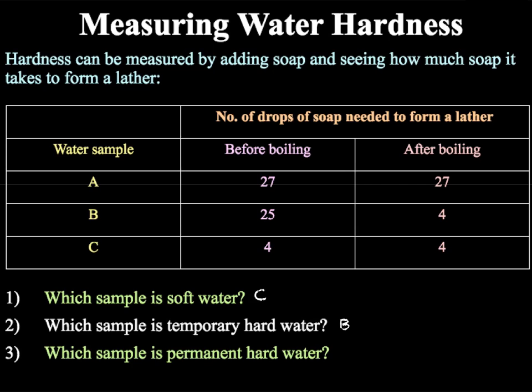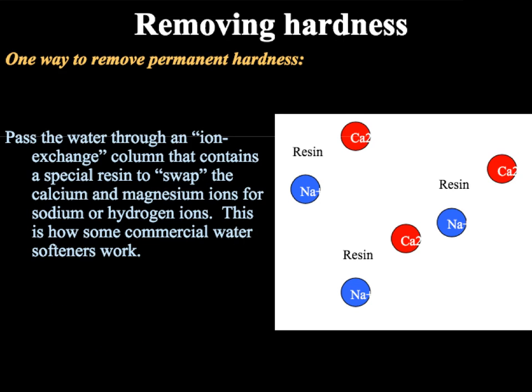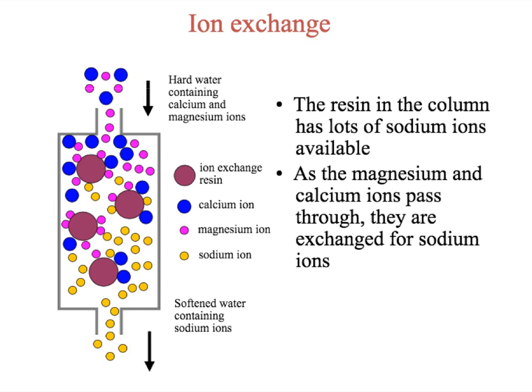Since boiling has had no effect on the hardness of sample A, in order to remove permanent water hardness we need to use an ion exchange column. This is a column that contains a special resin to swap the calcium and magnesium ions for sodium or hydrogen ions, and is how many commercial water softeners work. Inside the ion exchange column the special resin is held in place with lots of sodium ions available for exchange. The hard water containing calcium and magnesium ions enters the top of the column; those ions are attracted to the resin where they are exchanged for sodium ions, which then exit the bottom of the column with the water.